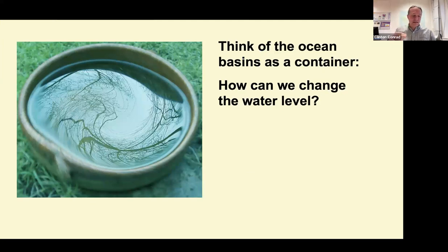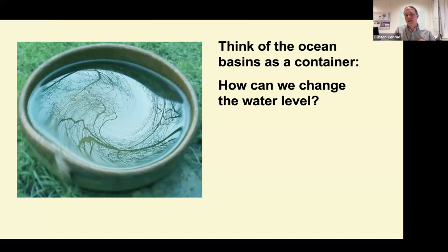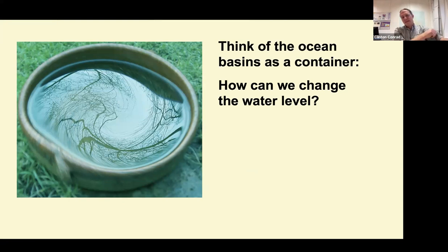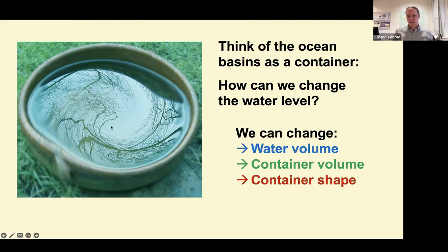What I want to do today is talk about the solid earth processes that affect sea level, and I'll highlight some of my own research. First, I want to talk generally about how the solid earth can affect sea level. One way to think about this is if you had a cup of water — how can we change the level of water in the cup? I thought of eight different ways, generally falling into three categories: you can change the volume of water in the cup, change the container volume of the cup by making it bigger or smaller, or change the shape of the container, which might make sea level go up in some places and down in others.